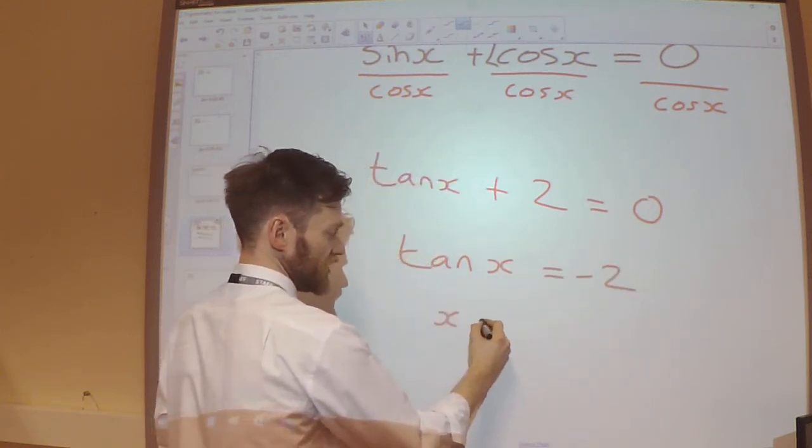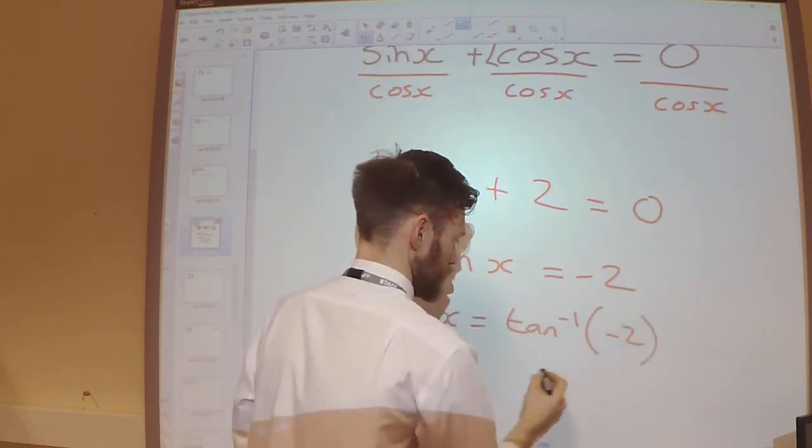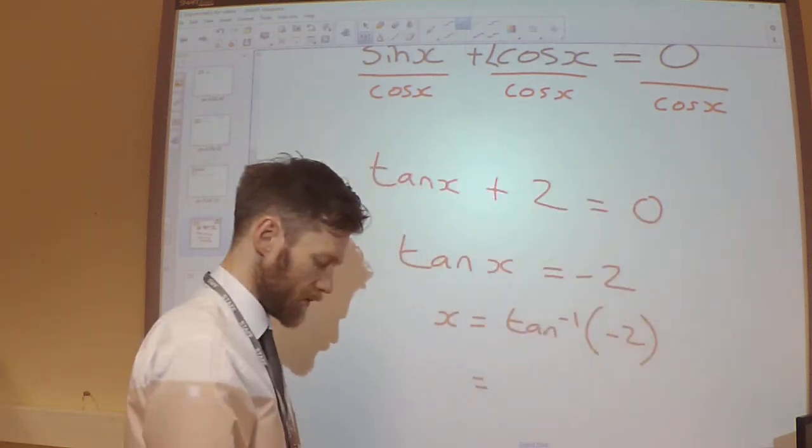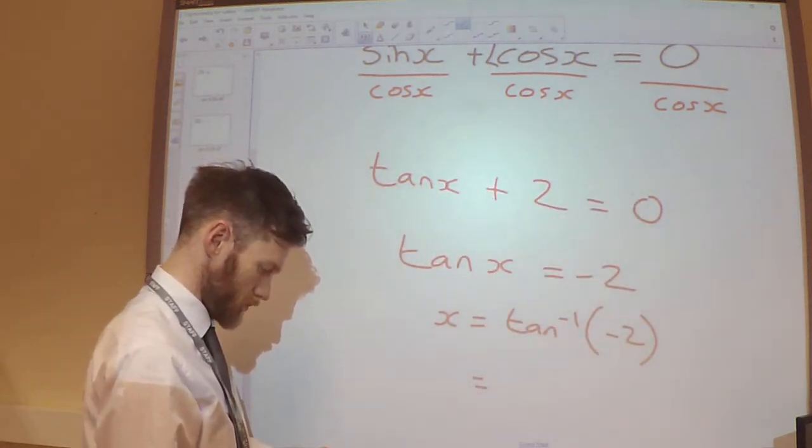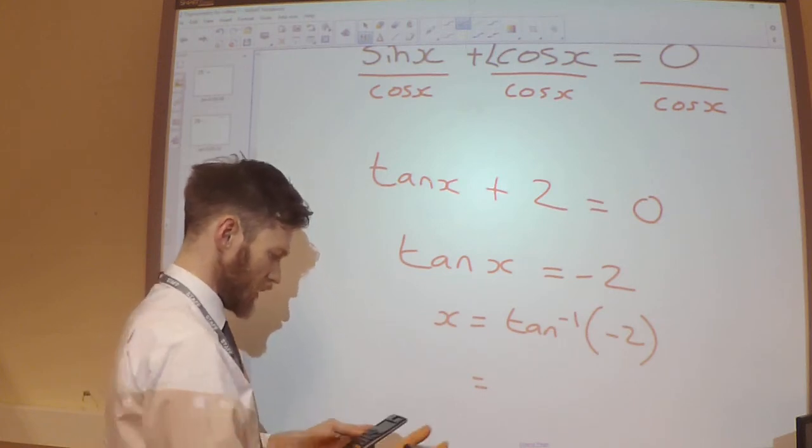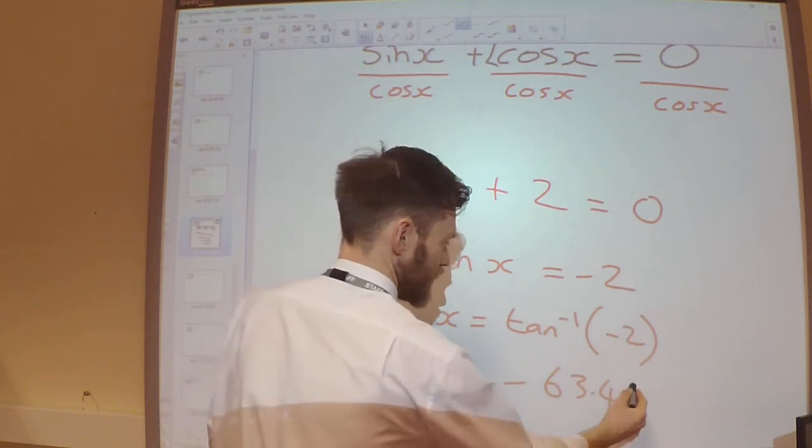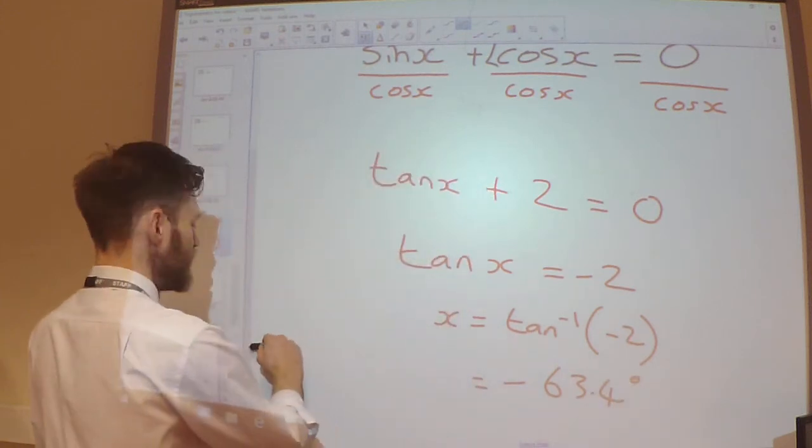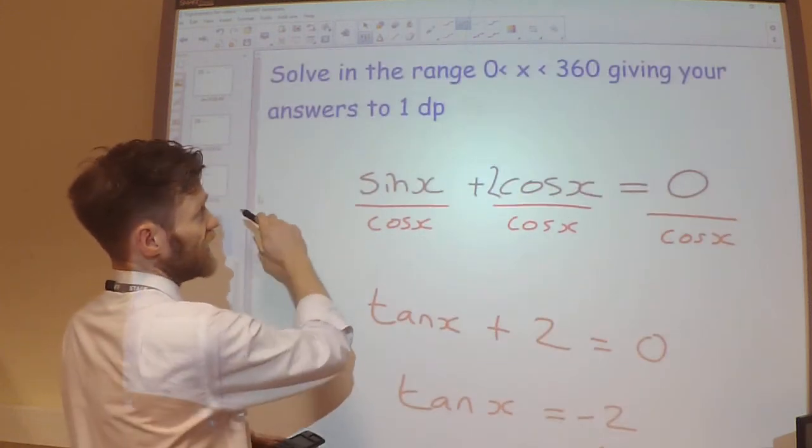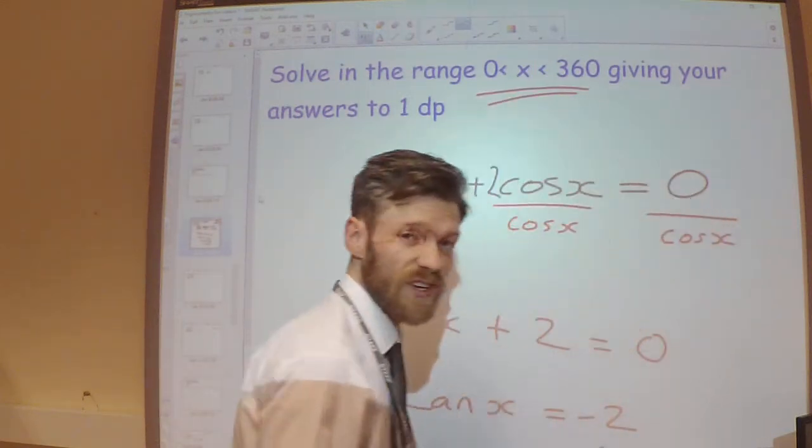So now if I do tan inverse, let's get my calculator. I get minus 63.4 to one decimal place. If I now go, I need to find the solutions between 0 and 360.